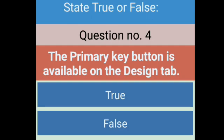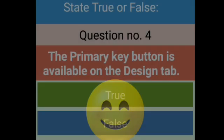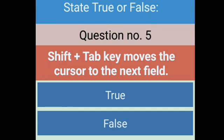Question number five: Shift plus Tab key moves the cursor to the next field. Does Shift plus Tab key move to the next field? No, we go to the previous field. Shift plus Tab key moves to the previous row or previous field. So this is false, right answer.